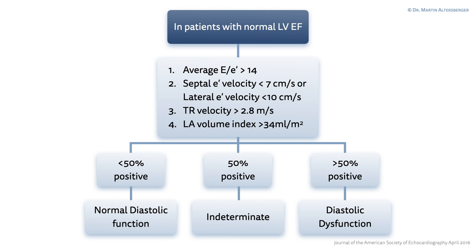You have the average E to E' ratio, you have the septal E' velocity and the lateral E' velocity, or one of them, you have the TR velocity and the left atrial volume index. If more than two — so more than 50% — are positive, you can say that patients with normal left ventricular ejection fraction have diastolic dysfunction.